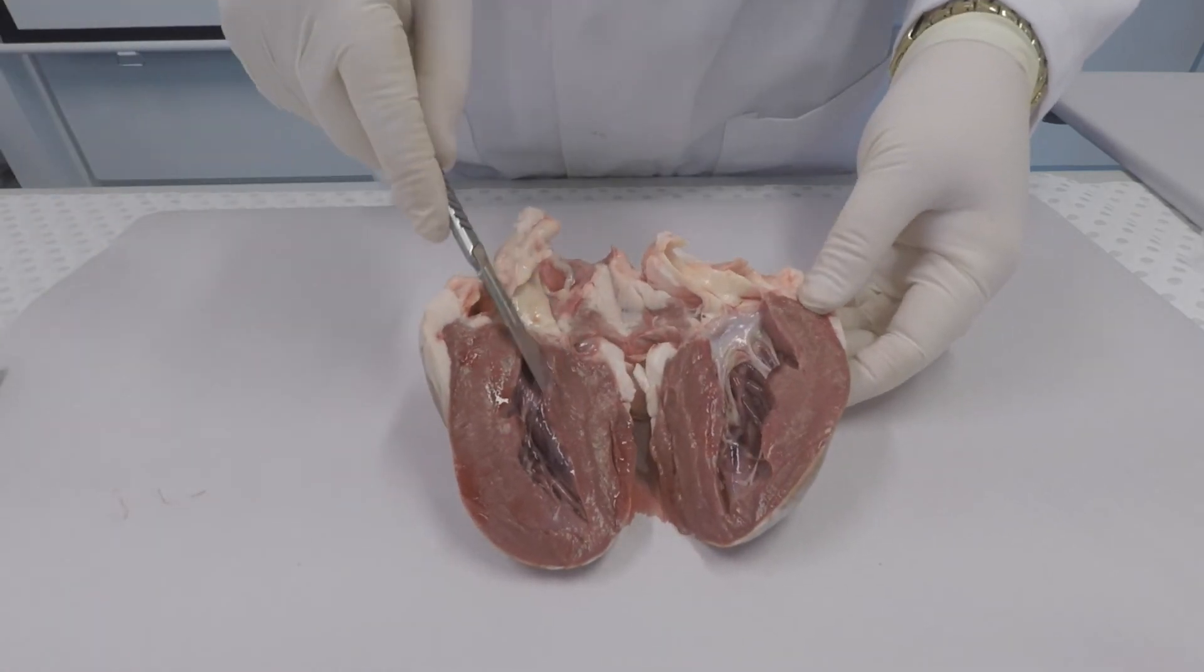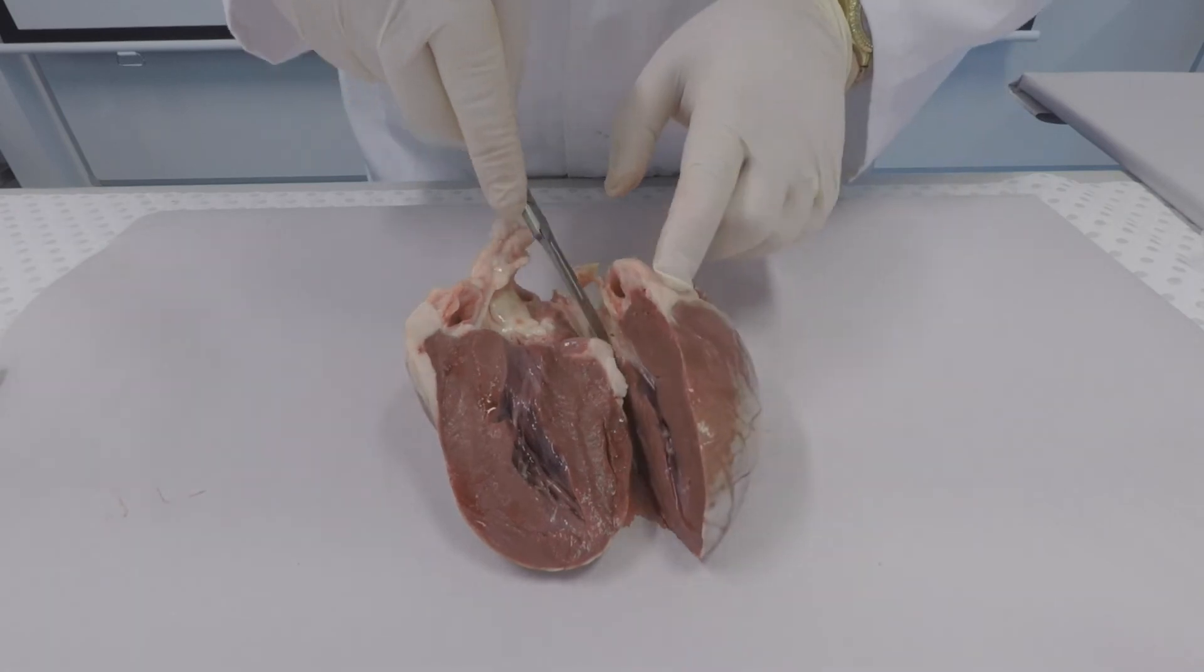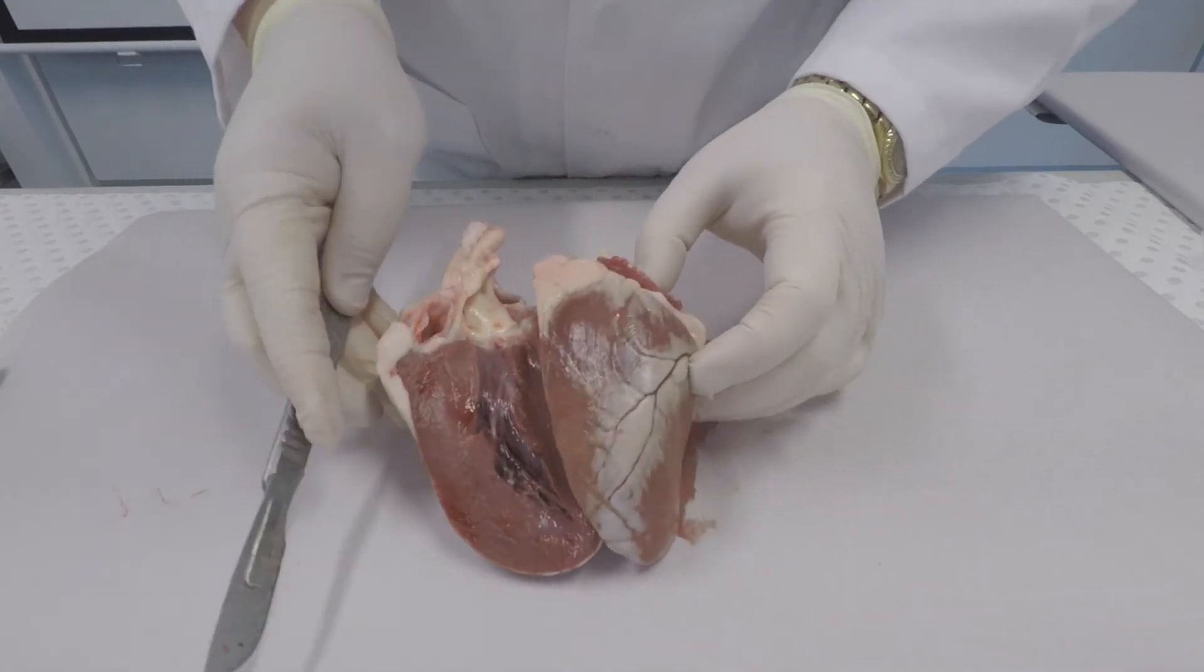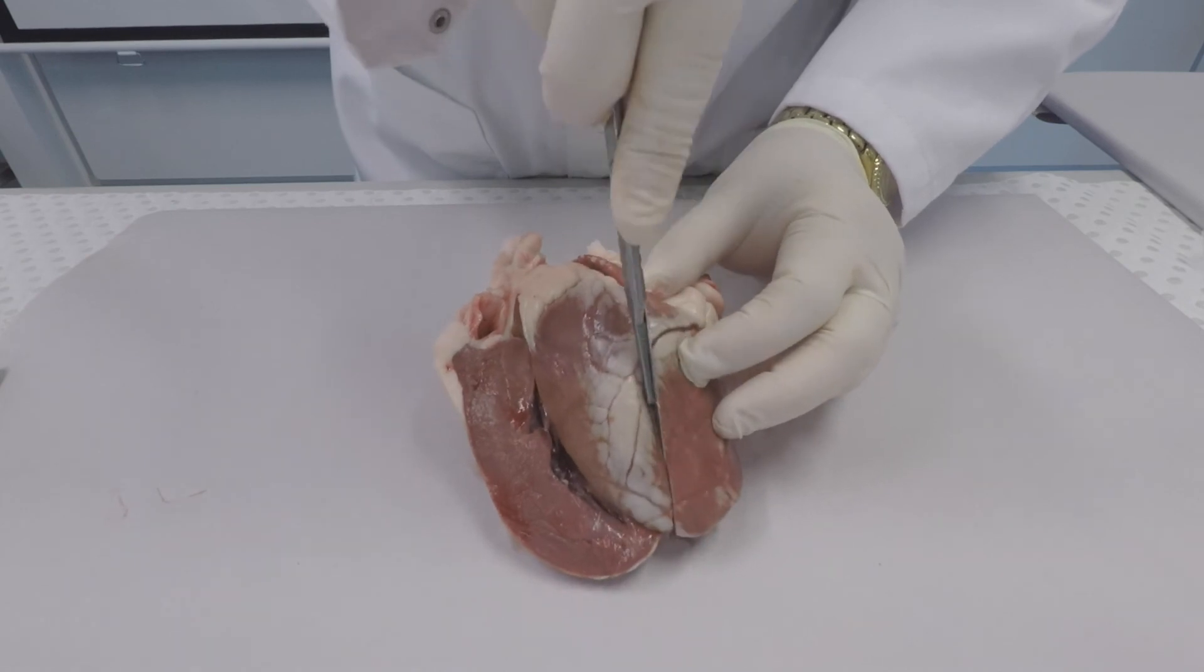The left and right side of the heart are separated by a septum. That ensures that the deoxygenated blood and oxygenated blood remain separate.